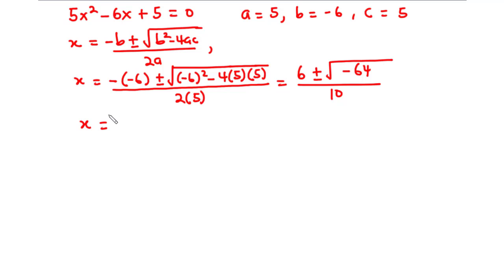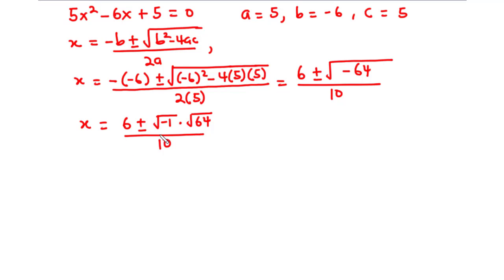Let's further simplify. This becomes 6 plus or minus the square root of negative 1 times the square root of 64, all divided by 10. Since the square root of negative 1 is equal to j, we have x equal to 6 plus or minus j, and the square root of 64 is 8, so that becomes j8, all divided by 10.